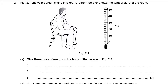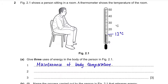Question 2: figure 2.1 shows a person sitting in a room where the thermometer shows 12 degrees Celsius, well below human body temperature. Part A: give the uses of energy in the body of this person. This person will need energy to maintain body temperature because the room temperature is only 12 degrees Celsius. We also need energy for muscular contraction or to pump blood, and energy to carry out metabolic reactions like digestion or excretion, which are happening all the time.